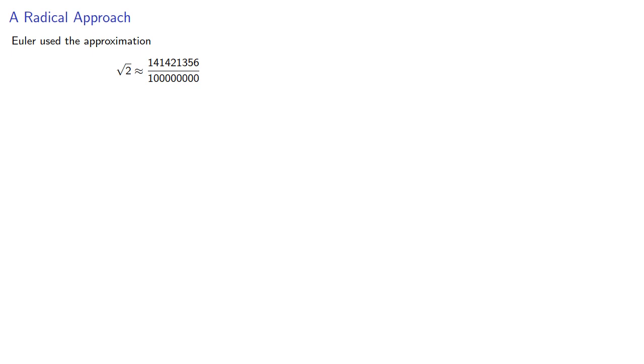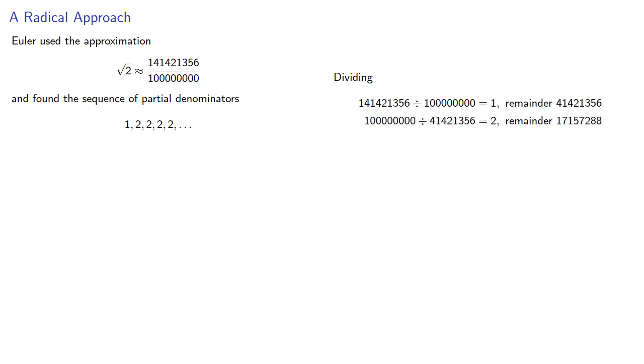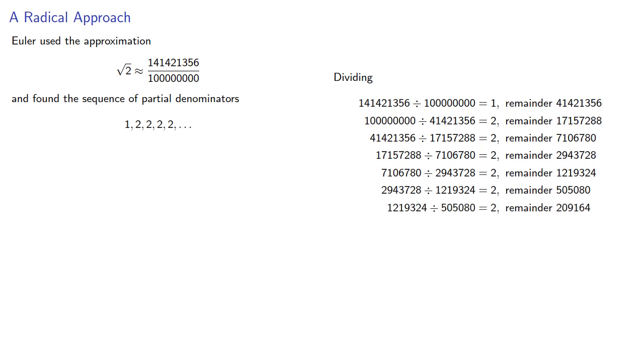Euler used the approximation for square root of 2 and found the sequence of partial denominators. Remember we can find these by applying the Euclidean algorithm. We'll divide to get a quotient and remainder, divide to get a quotient and remainder, and lather, rinse, repeat. And a rather remarkable thing happens: our quotients all seem to be 2, corresponding to the relationship.